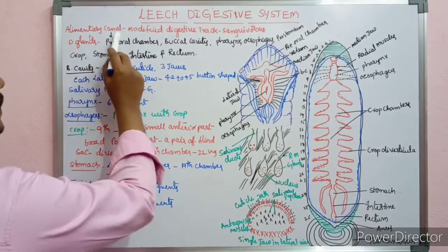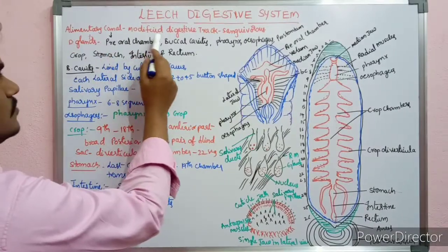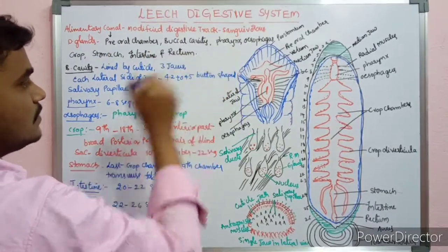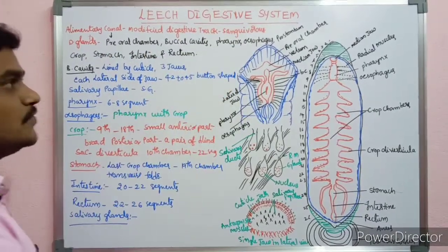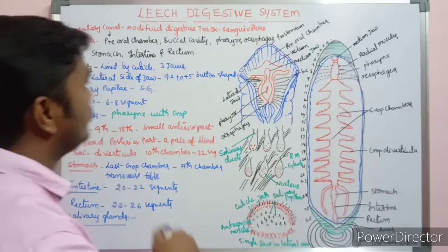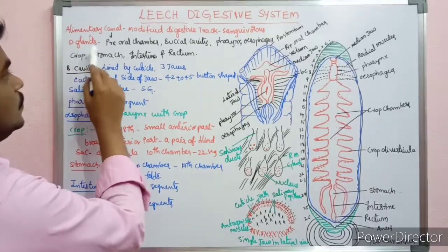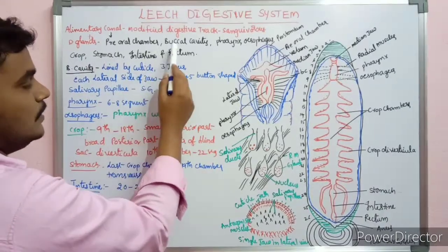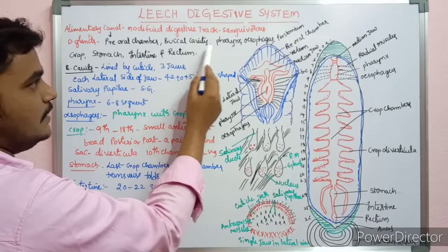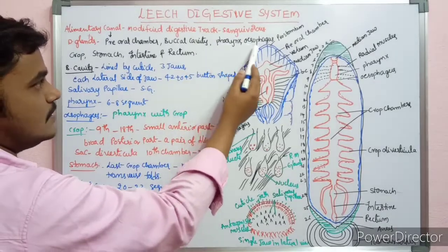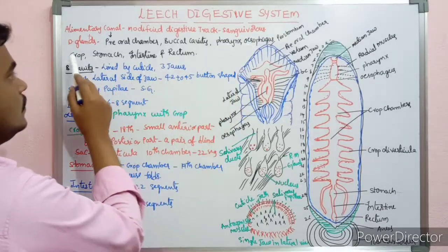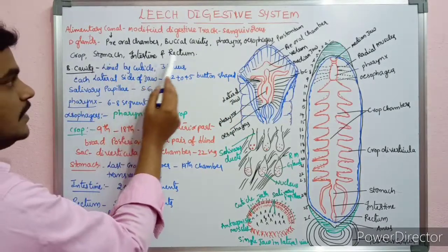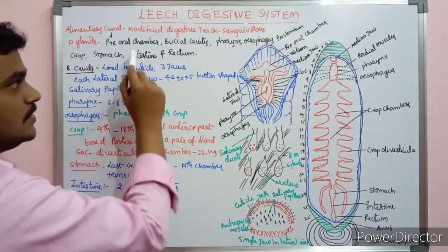First, the alimentary canal contains a modified digestive tract. The parts are: pre-oral chamber, mouth and couch, buccal cavity, pharynx, esophagus, crop, stomach, intestine, and rectum.